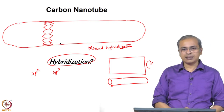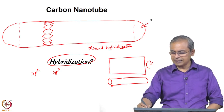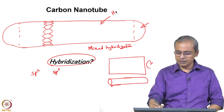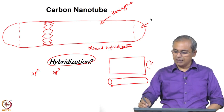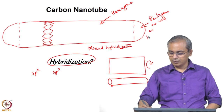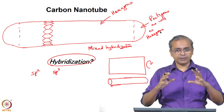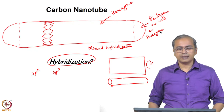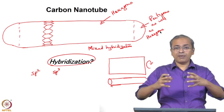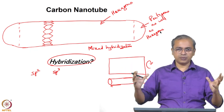At the two ends of the nanotube you have hemispherical caps consisting of pentagons and hexagons. Along the body of the tube you have only hexagonally bonded carbon atoms — hexagons only — while the end caps have an array of both hexagons and pentagons that help create those two hemispherical end caps.